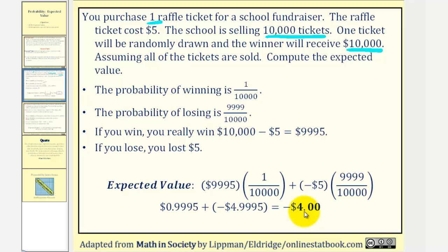This means if you were to play this lottery time after time, the expected result would be that you lose $4 each time. Let's take a look at a second example.